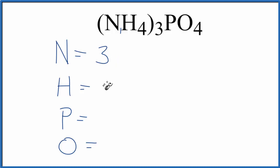3 times 4, 12 hydrogen atoms. In the phosphate, nothing written after the P, so we just have 1 of those and 4 oxygen atoms.